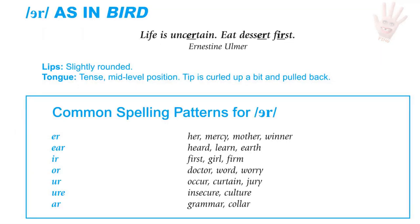UR as in bird. For the UR sound, the lips are slightly rounded, the tongue is tense and at a mid-level position, and the tip of the tongue is curled up and pulled back. Common spelling patterns: ER as in her, mercy, mother, winner; EAR as in bird, learn, earth; IR as in first, girl, firm; OR as in doctor, word, worry; UR as in occur, curtain, jury; URE as in insecure, culture; and AR as in grammar and caller.